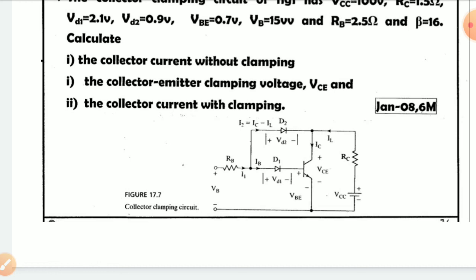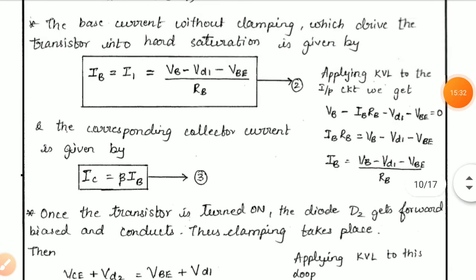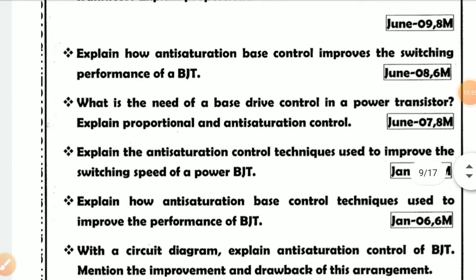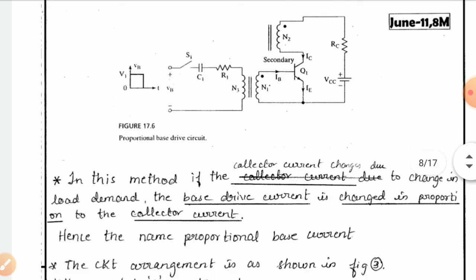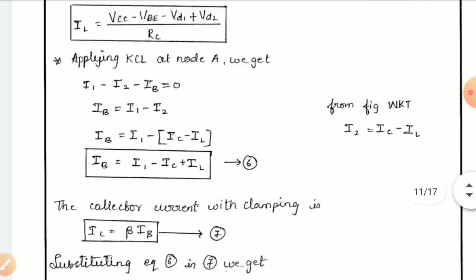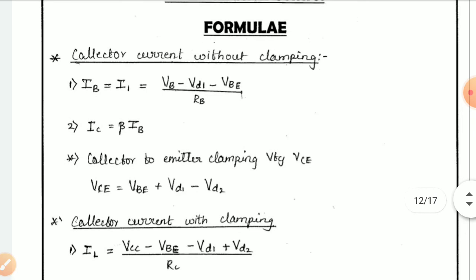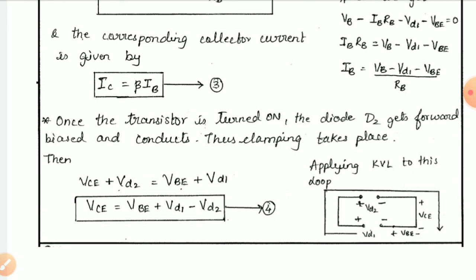Such problems involving collector current without clamping, collector current with clamping, and collector-emitter voltage are typical exam questions. The parameter values may vary but the solution approach is similar. Assignment problems will also be provided — feel free to contact if you have doubts on these derivations or problems.